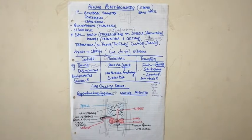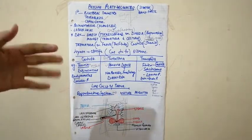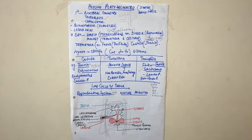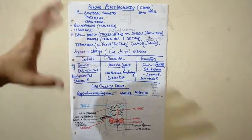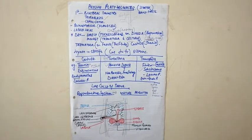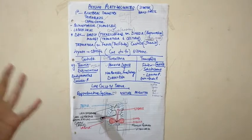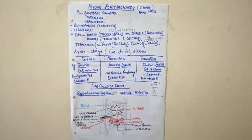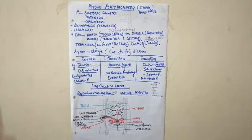The phyla prior to this were having only ectoderm and endoderm — they were diploblast. The extra germ layer that developed in this phylum is mesoderm. It is also the first phylum which had cephalization, meaning you can distinguish which part is the head in these organisms. They also have excretory cells called flame cells or protonephridia for excretion, and a ladder-like nervous system.